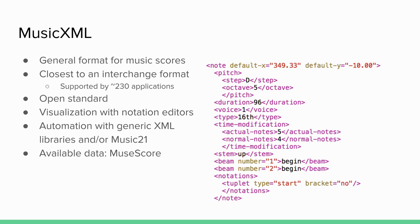MusicXML tries to do basically everything. It represents on the same note object both its semantic properties like pitch and the graphical properties like position on the page. There are some tricks in how MusicXML represents musical time — duration ticks — because it can be very directly exported to MIDI. It's important to know this format if you work with music scores digitally.